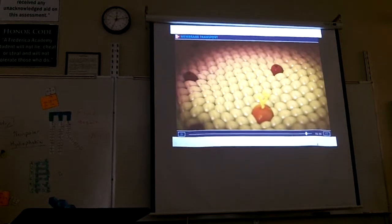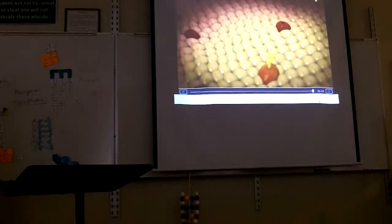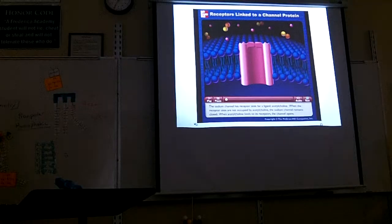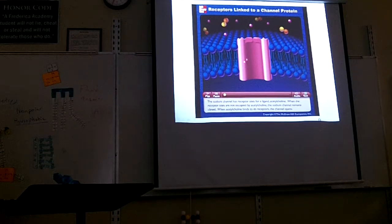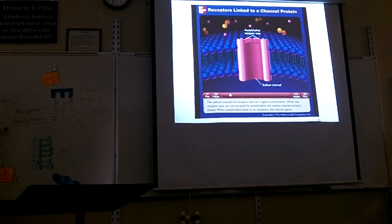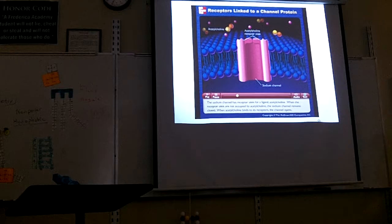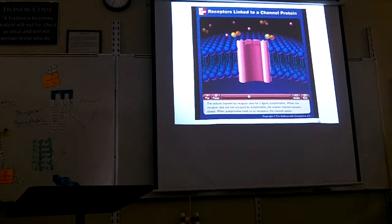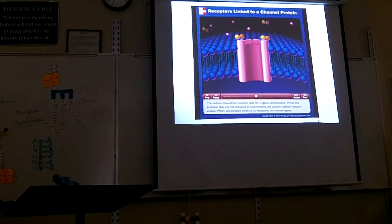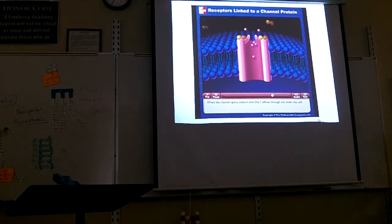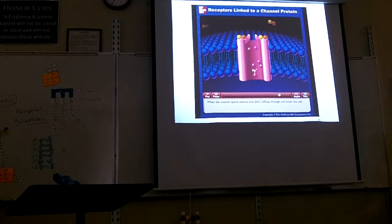The membrane resembles a mosaic. Here it shows a protein letting stuff through — this is a different video. The sodium channel has receptor sites for a ligand, acetylcholine. When the receptor sites are not occupied by acetylcholine, the sodium channel remains closed. When acetylcholine binds to its receptors, the channel opens. Therefore, the channel is called a ligand-gated ion channel. When the channel opens, sodium ions diffuse through and enter the cell.